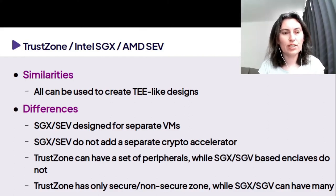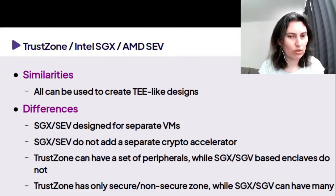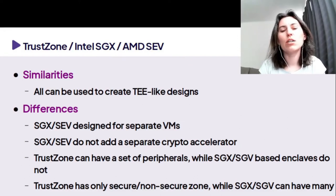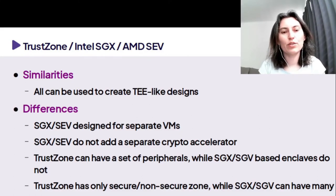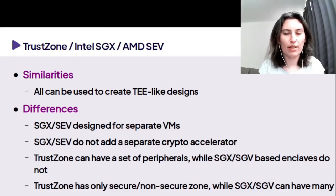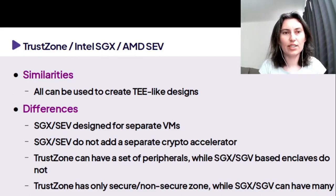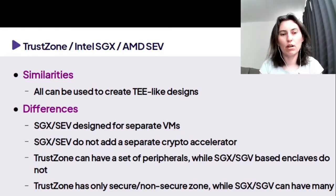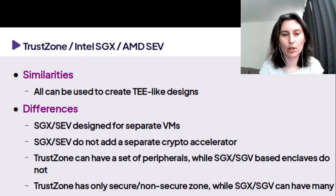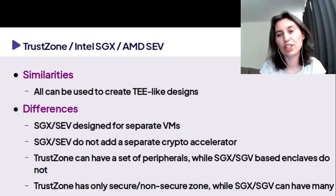Another difference is that in TrustZone, you have only one secure world and one non-secure zone — so you can run one instance of the secure OS and one instance of the non-secure OS. With SGX and SEV, you can run multiple enclaves with different applications and different copies of the output.